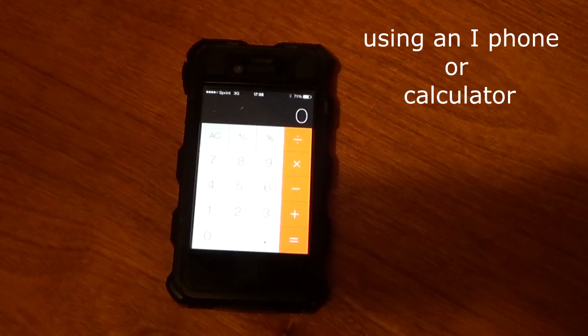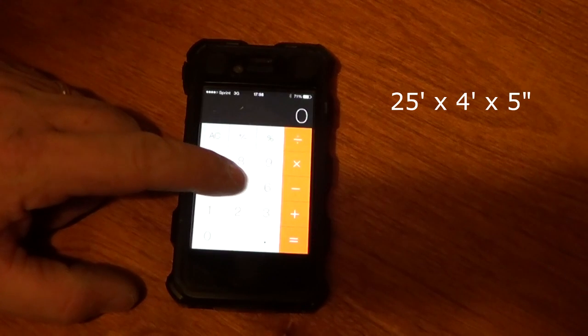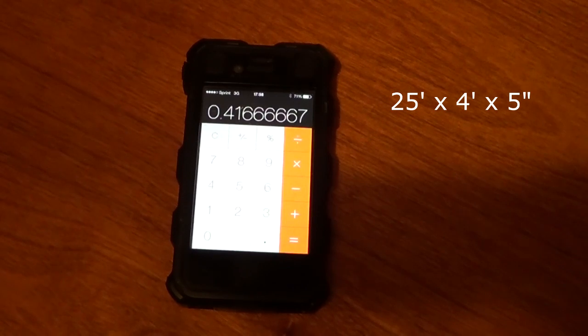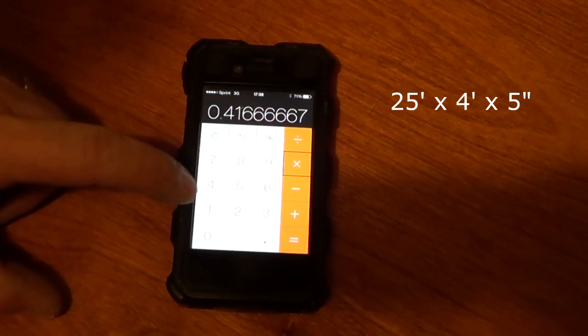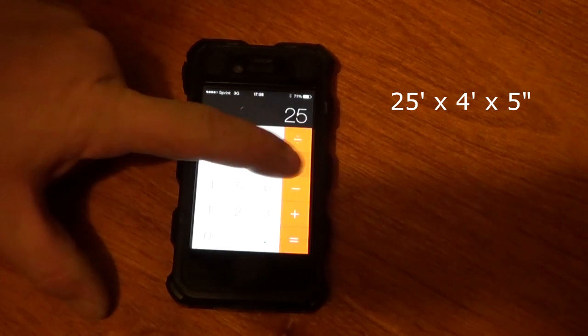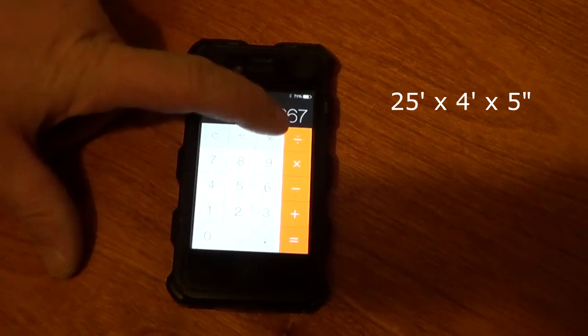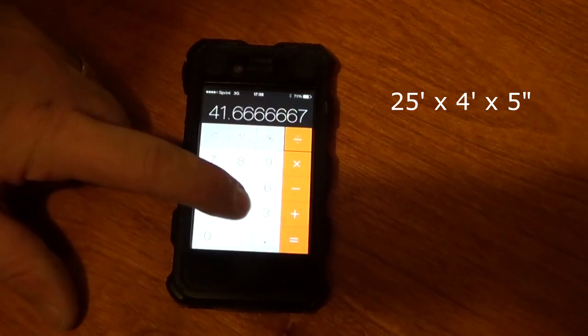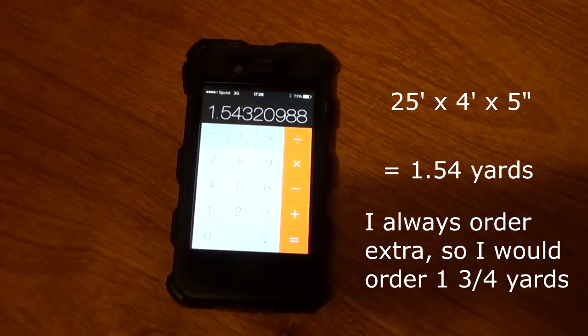We know that you're doing 25 feet by 4 feet by 5 inches. Well, we've got to find out what the calculation is for 5 inches, what that's equal to in feet. So it would be 5 inches divided by 12 inches equals. So the thickness of our concrete is .416 feet. Since we have that calculation, we're going to multiply that by 25 feet times 4 feet equals 41.66 cubic feet. Now to get to cubic yards, we have to divide 41.66 by 27. And the reason we do 27 is because there's 27 cubic feet in a yard of concrete. That gives us 1.54 cubic yards of concrete for the job.